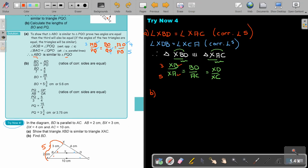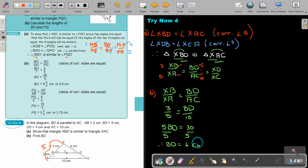Then BD, where is BD? This is the one I want. Do I have AC? Yes, I have AC, and that's 10. So it's going to be XB over XA equals BD over AC. This is 3 over 5 equals BD over 10. Cross multiply. So it's 5BD equals 30. Divide 5. Therefore, BD is equal to 6 centimeters.